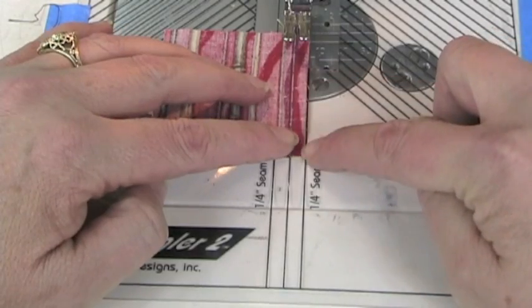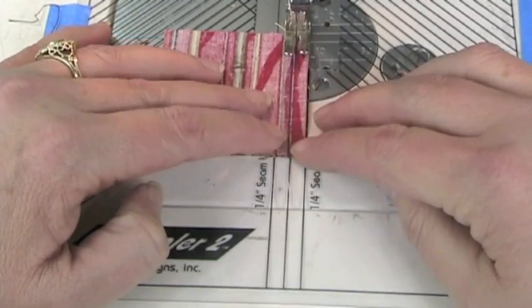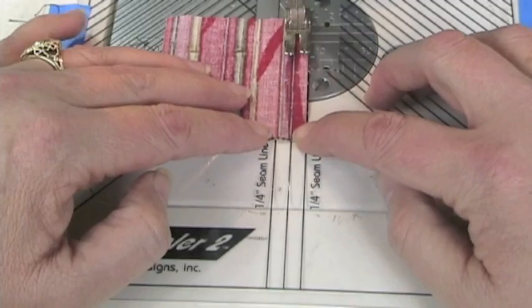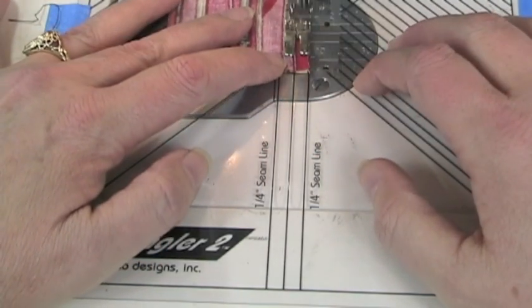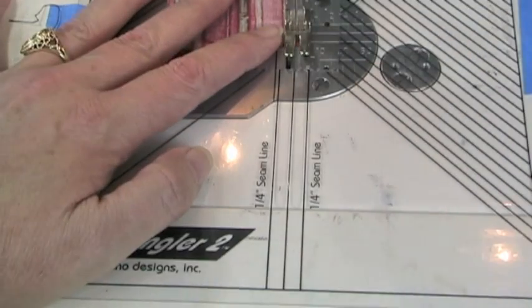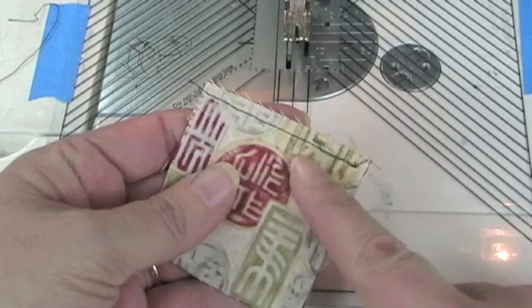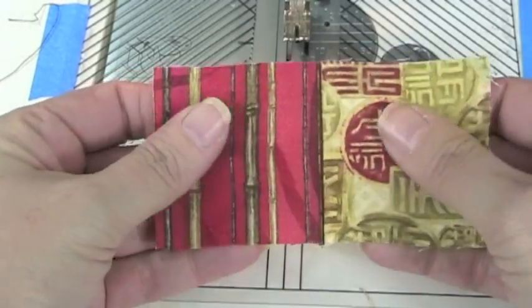And of course, you can use it the traditional way. So regular piece work. It's a quarter of an inch seam. Gives you nice long focal point. So you can use it for traditional work as well.